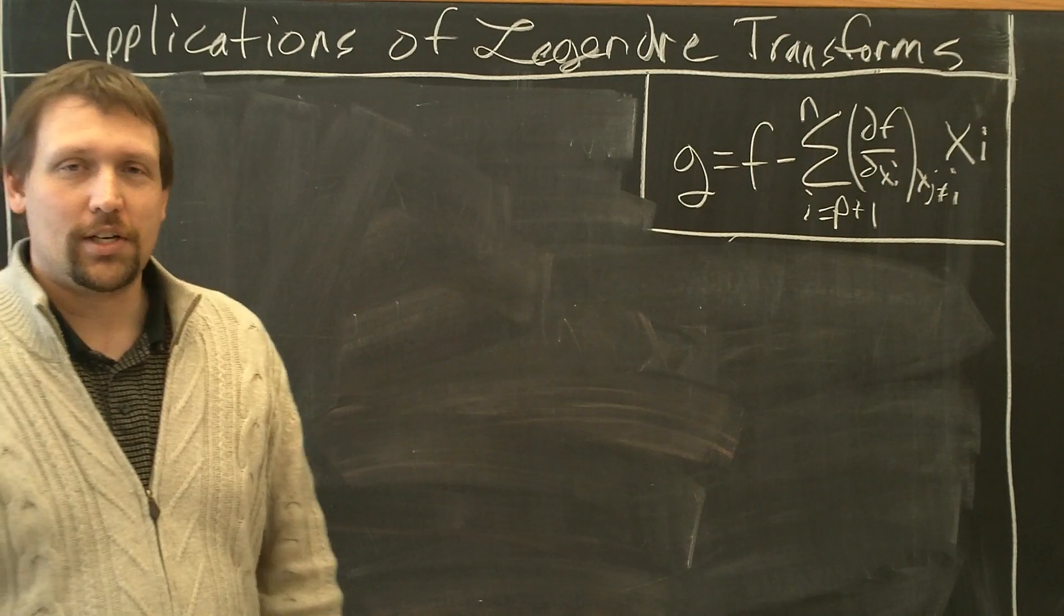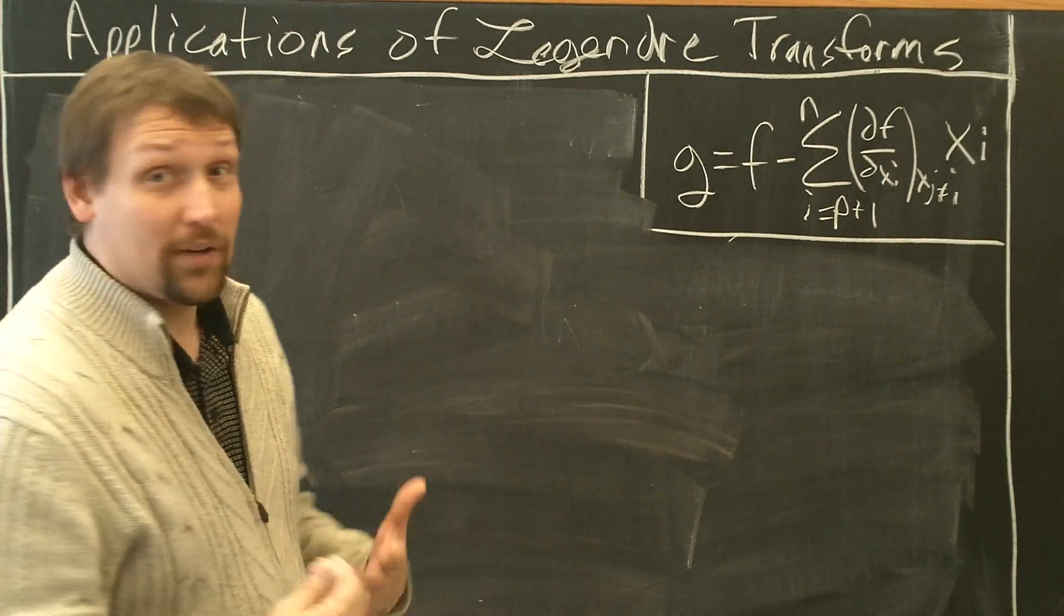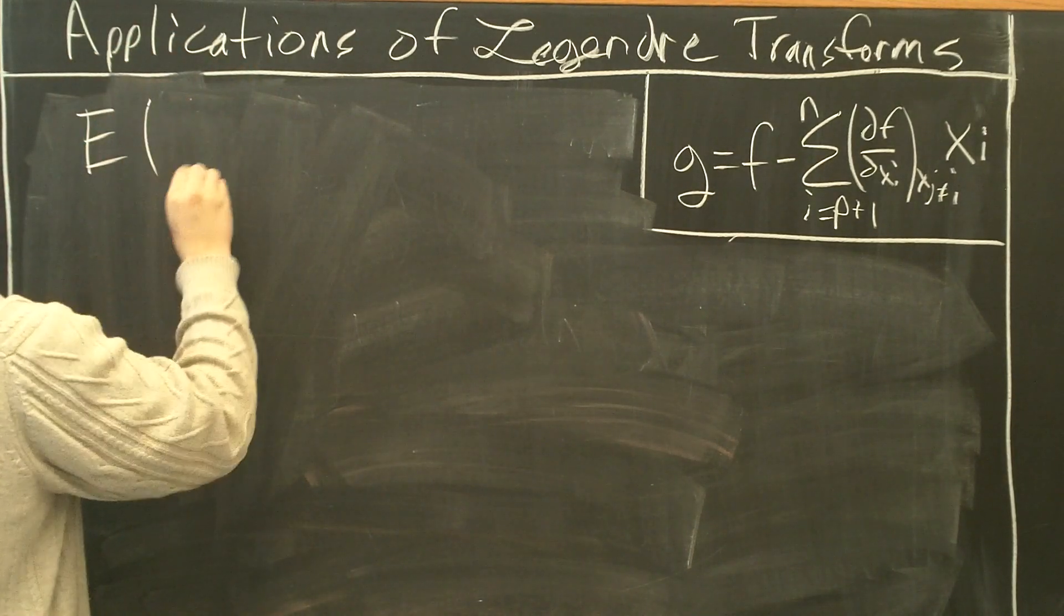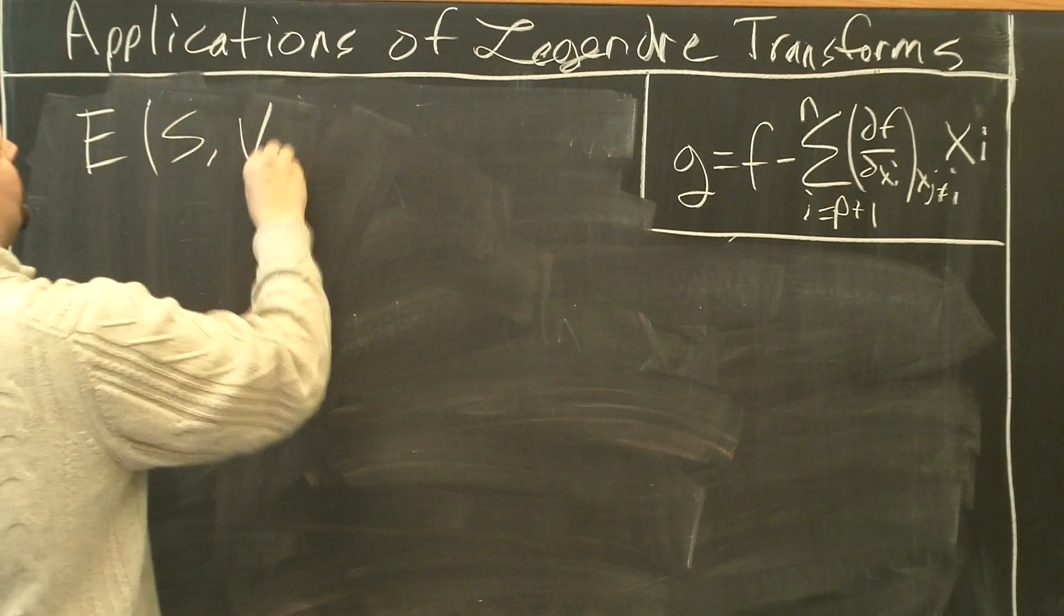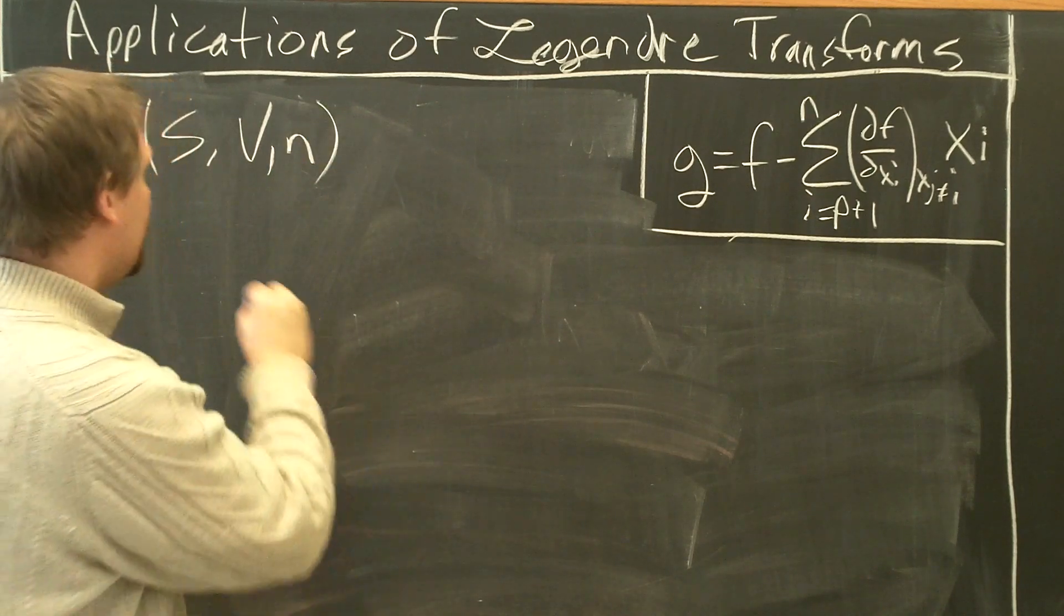Let's do this one more time. Apply the Legendre Transform to our state function energy and see what new state function we can get out of it. E is a natural function of S, V, N. We've done two examples so far. Let's do the last one.